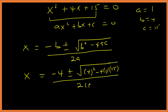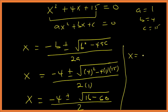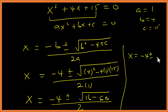Substituting: x equals negative 4 plus or minus square root of 4 squared minus 4 times 1 times 15, over 2. That gives negative 4 plus or minus square root of 16 minus 60 over 2, which is negative 4 plus or minus square root of negative 44 over 2.